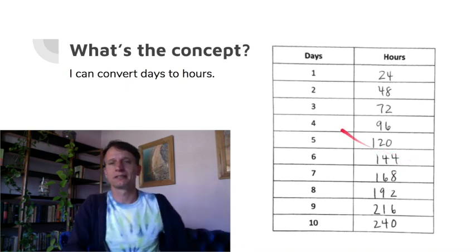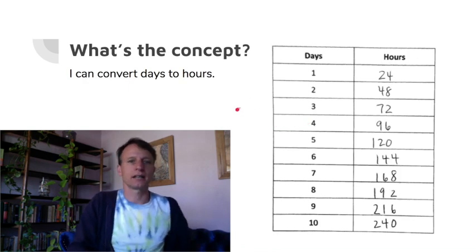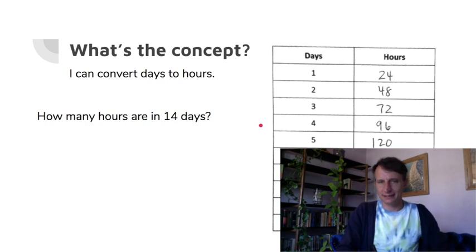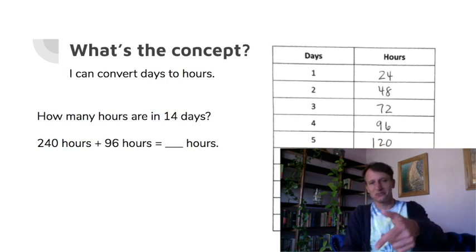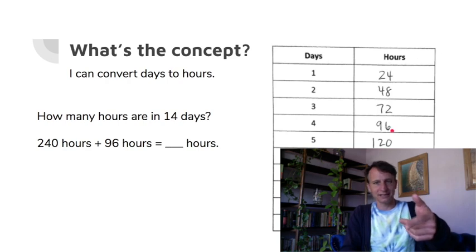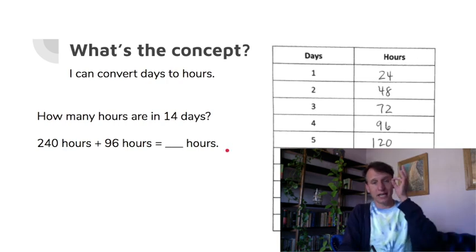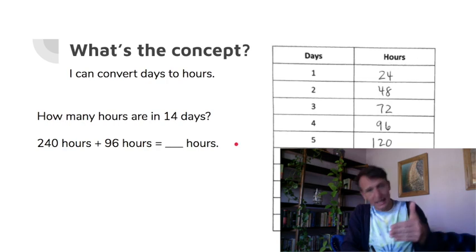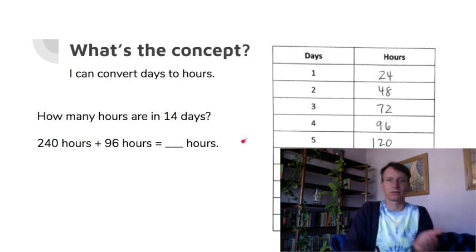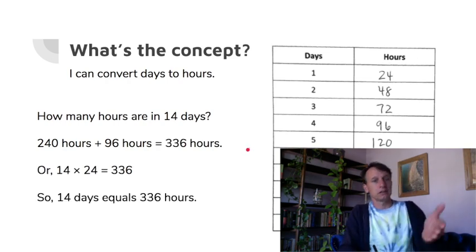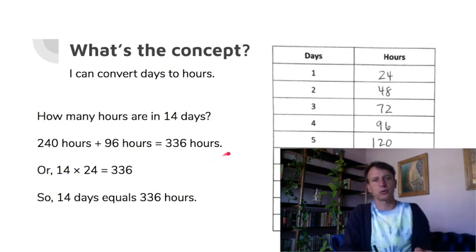All right, so how many hours are in 14 days? Well, we can do it two ways. We have this handy dandy table, so we say 10 days is 240 hours and four days is 96 hours. So I could put together 240 and 96. By the way, I will go into this one—one way to do that is because 96 is so close to 100, add 100 and get 340, and then subtract the four back out. All right, so 336 hours in 14 days. You can also do it with the multiplication 14 times 24, and you can and should and must get the same answer.